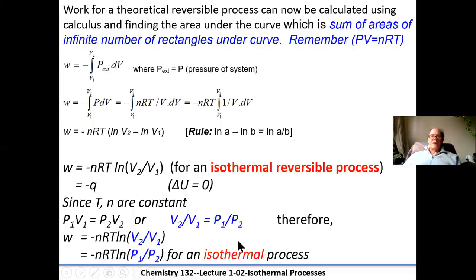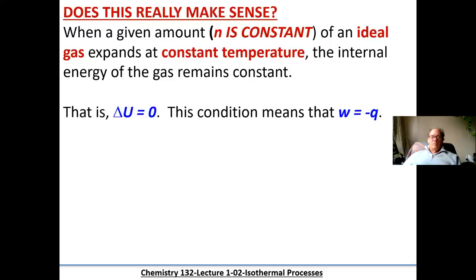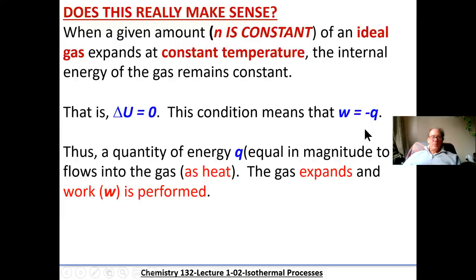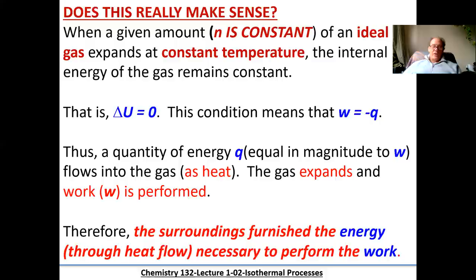Does this really make sense? When you have a given amount of ideal gas expanding at constant temperature, the internal energy of the gas remains constant, so delta U must equal zero. This condition means the work and the heat are equal and opposite. If a gas expands, heat energy is required and they'll be equal and opposite. Thus Q always equals W. When gas expands and work is performed, the energy comes from the surroundings, which furnish energy through heat flow necessary to perform the work.